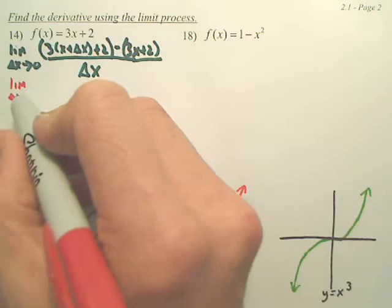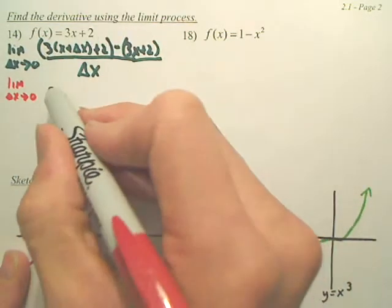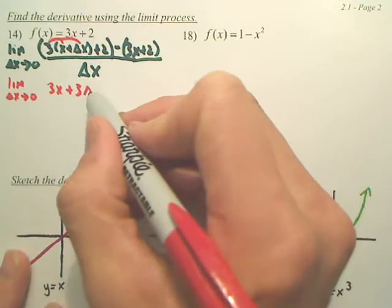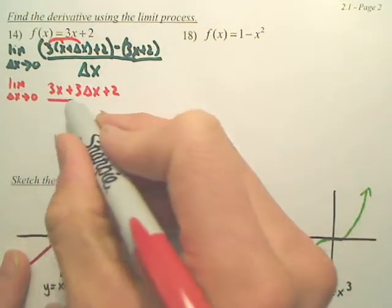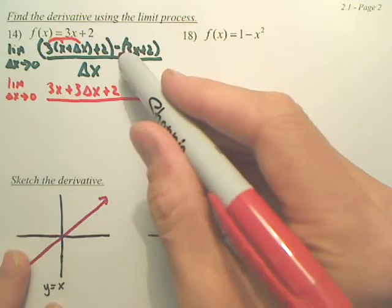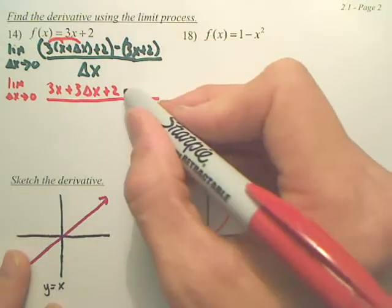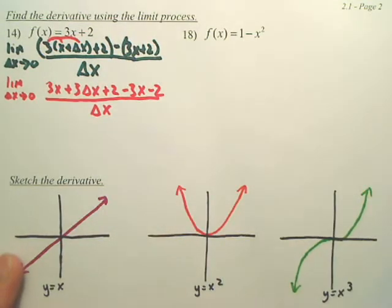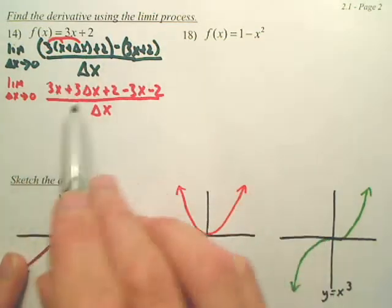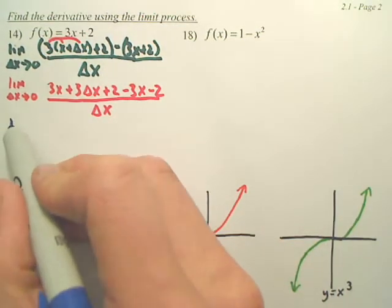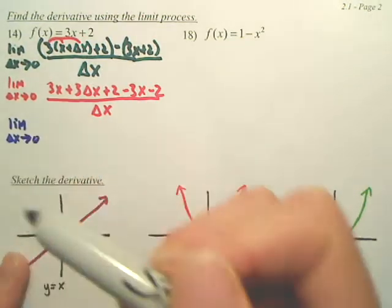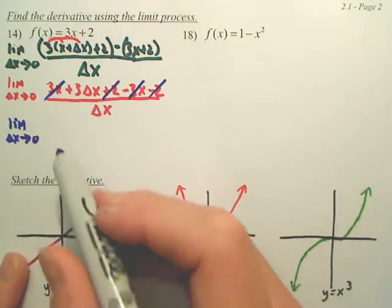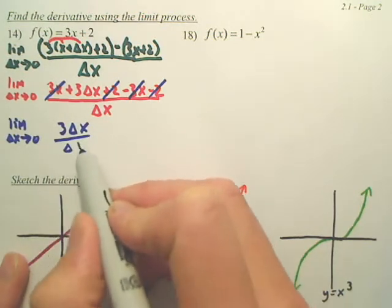So basically, watch what happens. Keep the word limit in front. Distribute the 3. Distribute the 3, and then distribute the negative 1. Distribute the 3 here. The top's done. Rewrite the word limit. Do you see how these are going to cancel right here? And so are these.